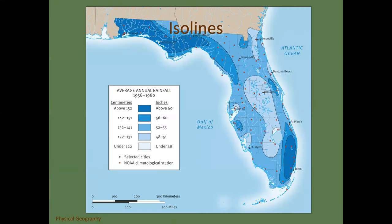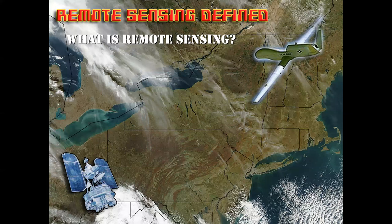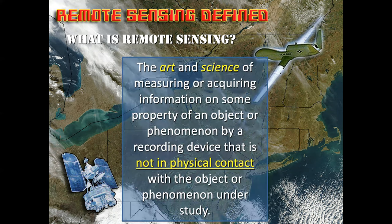Here's another example of iso lines — this happens to be precipitation in inches or centimeters across the state of Florida. Remote sensing — what is it? It is both a science and an art. It's the idea of measuring or acquiring information about something when you're far from it. Imagine you want to examine a field and you get up on a balloon, fly over it, and take images — you're not in direct contact with whatever you're looking at, but you're still collecting information about it.